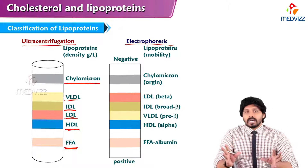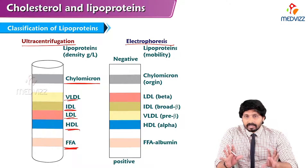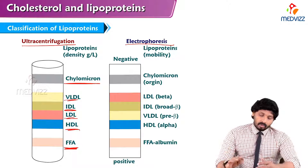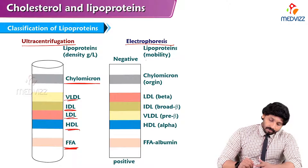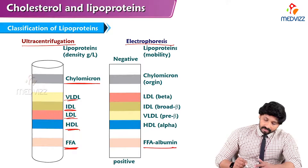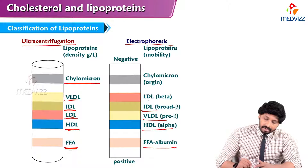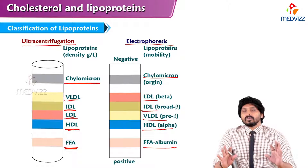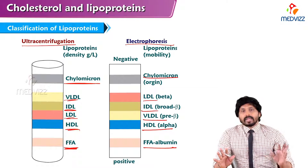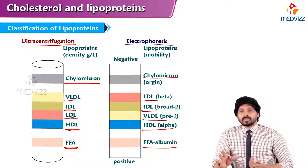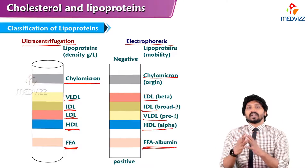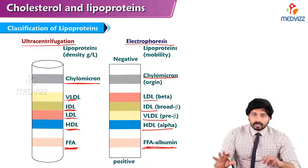In electrophoresis, separation is based on charge. Phospholipids and cholesterol are negatively charged. In an electric field, negatively charged particles move toward the positive side. Free fatty acids move first toward the positive side, then HDL, then VLDL, IDL, LDL, and finally chylomicrons. Chylomicrons don't have much cholesterol, so they are less negatively charged and cannot move much towards the positive side.